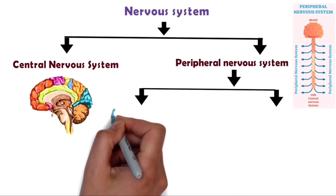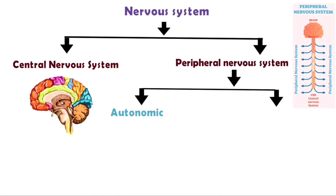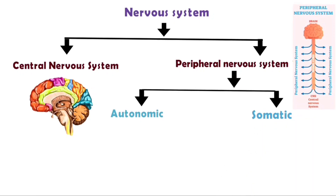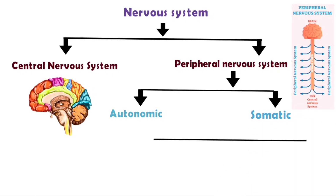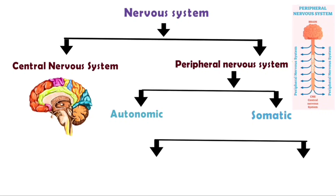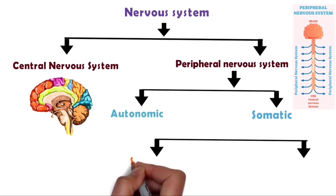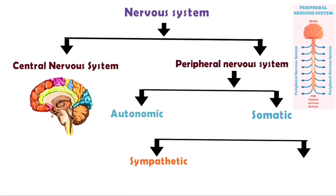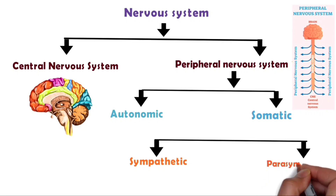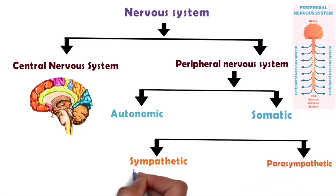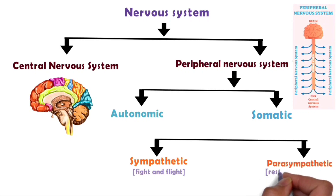The peripheral nervous system is further divided into autonomic and somatic. Among autonomic, the nervous system itself is divided into sympathetic and parasympathetic. The sympathetic nervous system does fight-and-flight work, while the parasympathetic system does rest and digestion.